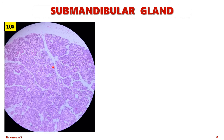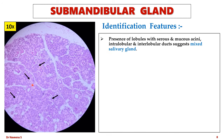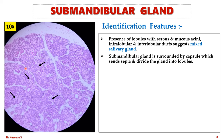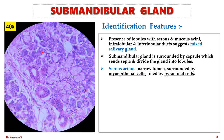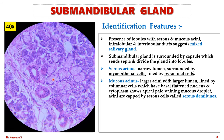Submandibular gland — here is the slide seen under low magnification. It is identified by the presence of lobules with serous acini and mucous acini, along with intralobular and interlobular ducts, which suggest a mixed salivary gland. Submandibular gland is surrounded by a capsule which divides it into lobules, each containing serous as well as mucous acini. Serous acini are smaller with narrow lumen, surrounded by myoepithelial cells and lined by pyramidal cells with a basal spherical nucleus. Mucous acini are larger with a larger lumen, surrounded by myoepithelial cells and lined by tall columnar cells which have a basal flattened nucleus and the cytoplasm shows apical pale-staining mucus droplets.